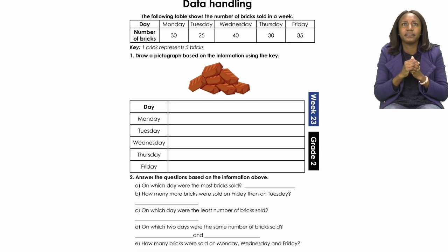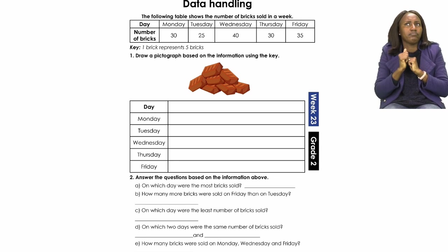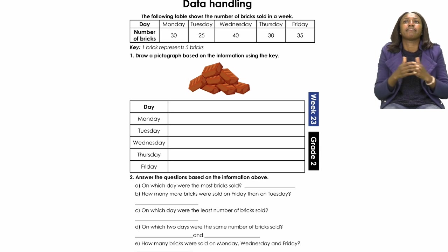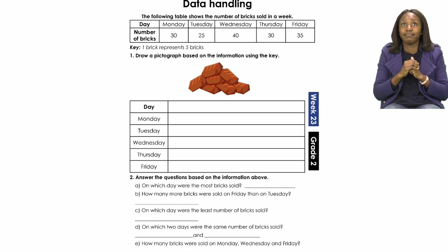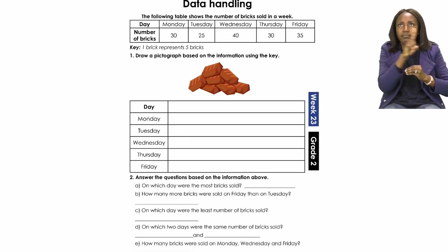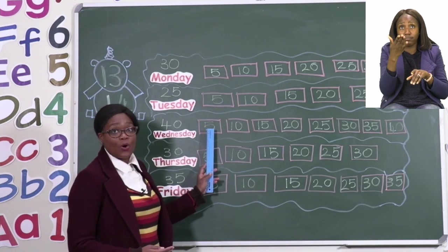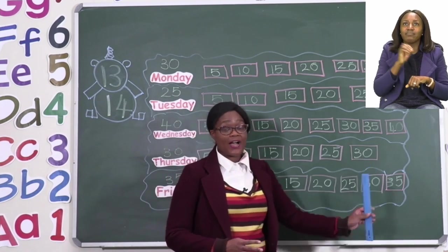Let's take a look at question D. D says: on which two days were the same number of bricks sold? You have to write down two of the days where the same amount of bricks were sold. Take your time with all of them, boys and girls. When you are done with your pictograph, that's when you can answer number two — it will help you a lot. When writing your pictograph, try to label each brick with the amount of bricks, like I have done on the board. Count in fives to find your answers.